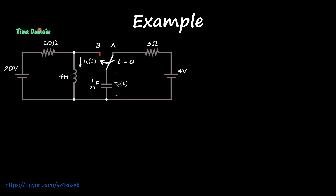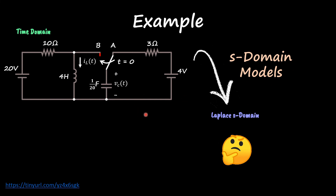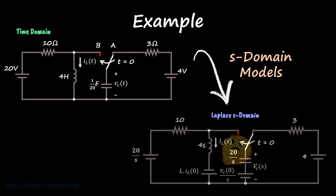Let's go over a full example to solidify these concepts. In the time domain, the circuit has two power supplies — one at 20 V and one at 4 V — plus a resistor, an inductor, another resistor connected with a capacitor, and a switch that toggles between points A and B to create the transient. When we apply the s-domain transformation, we apply the s-domain models to all these components. The resistors remain 10 ohms and 3 ohms. The capacitors and inductors have initial voltage and initial current respectively.